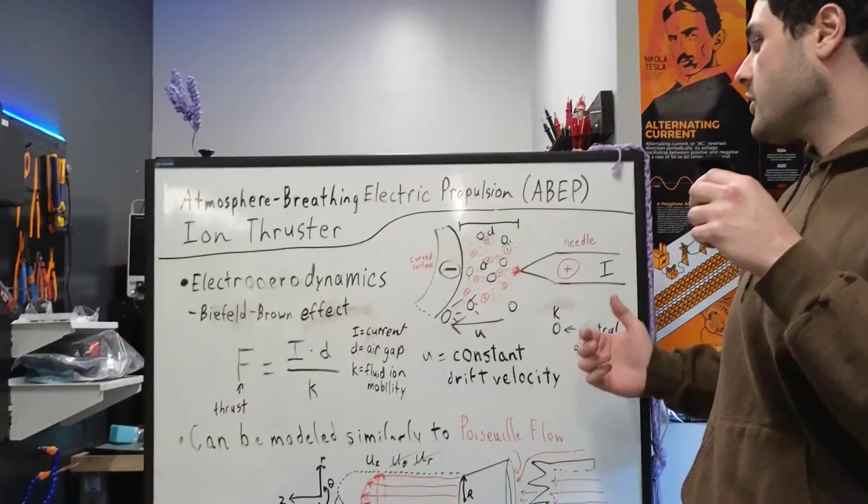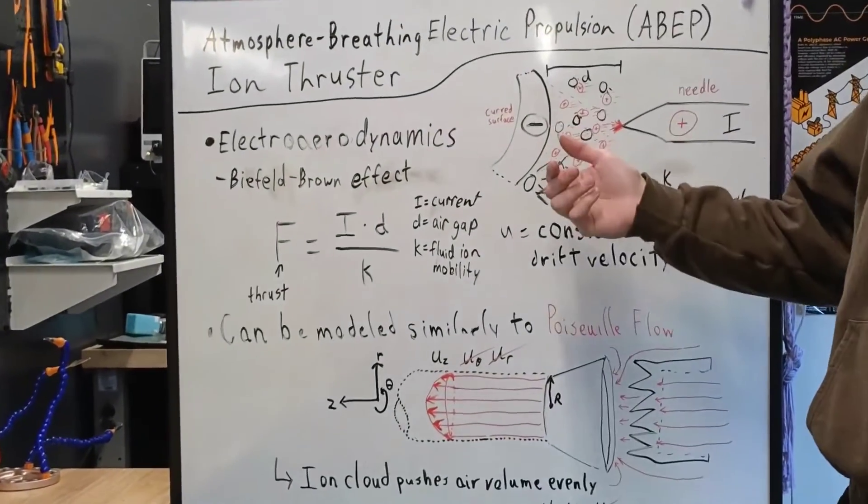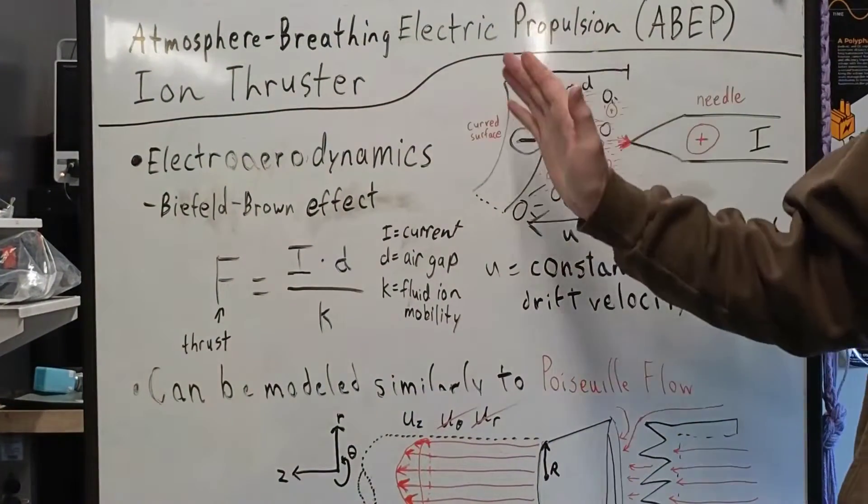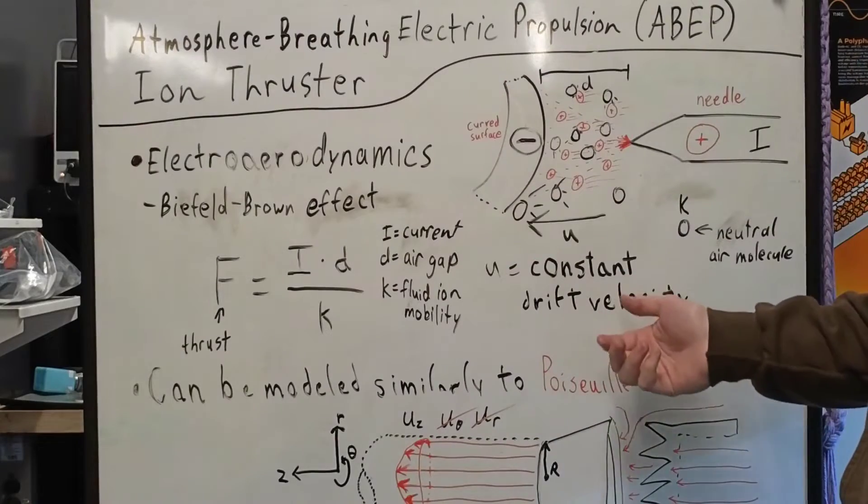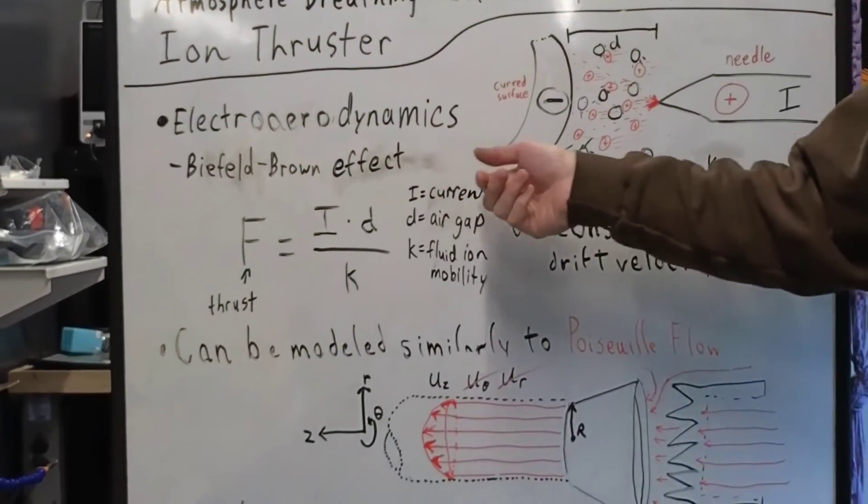Our ion thruster works because of the high current and voltage running through the needle to the curved surface, causing a positively charged ion cloud which pushes neutral air molecules forward with a drift velocity U and a thrust F determined by the Biefeld-Brown effect.